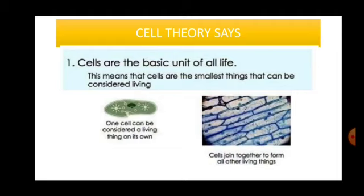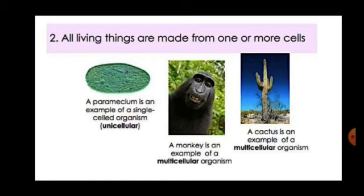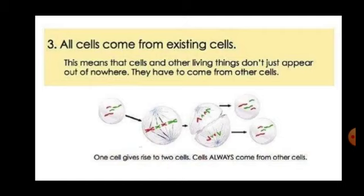So what does the cell theory say? Cell theory says that cells are the basic unit of all life — the smallest things that can be considered living. The second postulate states that all living things are made up of one or more cells. A paramecium is an example of a single-celled unicellular organism, while a monkey or a cactus are examples of multicellular organisms. The third postulate says that all cells come from pre-existing cells — they don't just appear out of nowhere. One cell gives rise to two cells; cells always come from other cells and make more of their kind.